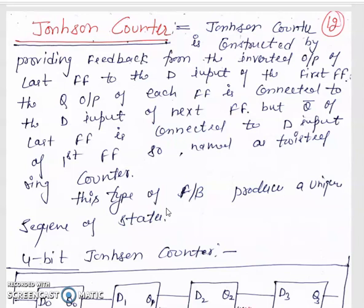What is the basic difference between the ring counter and the Johnson counter? It is the feedback loop. In the ring counter, the feedback uses the Q — that is the normal output — of the last flip-flop to the input of the first flip-flop. But in the case of the Johnson counter, we use Q-bar, the inverted output of the last flip-flop, as feedback to the input of the first flip-flop.